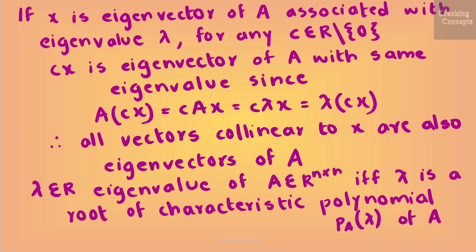If x is an eigenvector of A associated with an eigenvalue lambda, then for any scalar c which is a real number other than 0, Cx is also an eigenvector of A with the same eigenvalue. This is because A(Cx) = C(Ax) = C(λx) = λ(Cx). Thus all vectors that are collinear to x are also eigenvectors of A.